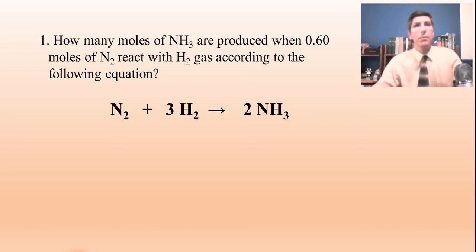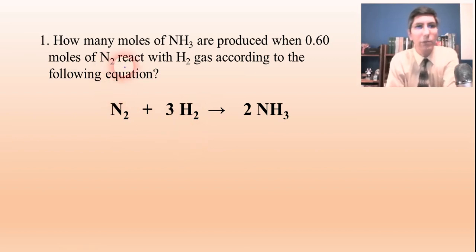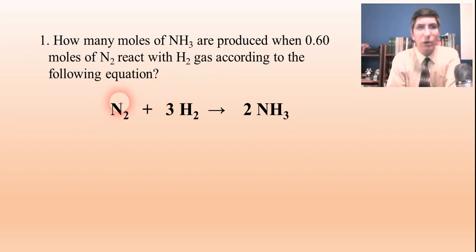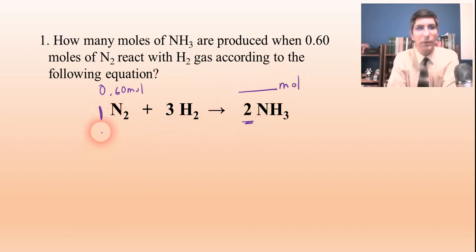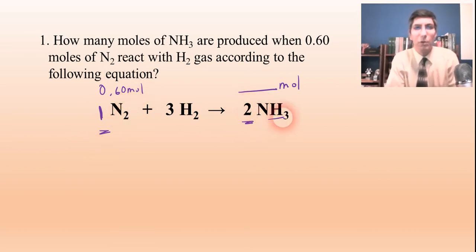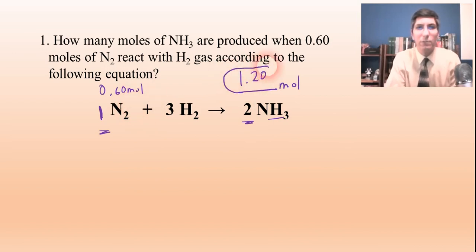The first question: how many moles of ammonia (NH₃) are produced when 0.60 moles of nitrogen react with hydrogen gas according to this equation? We're starting with 0.60 moles of nitrogen, and the question is how many moles of ammonia. This is a one to two ratio, so however many moles of nitrogen you have, you're going to have twice that many moles of ammonia. So 0.6 times two is just 1.20 moles.